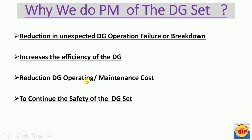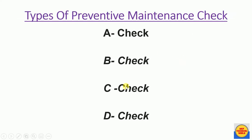Why do we do preventive maintenance of the DG set? If we do not do preventive maintenance as per schedule, there might be DG operation failure, breakdown, or major parts of the DG may be damaged, leading to accidental problems. The basic advantages of preventive maintenance are: reduction in unexpected DG operation failure or breakdown, increased efficiency of DG, reduced operating and maintenance costs, and continued safety of the DG set.